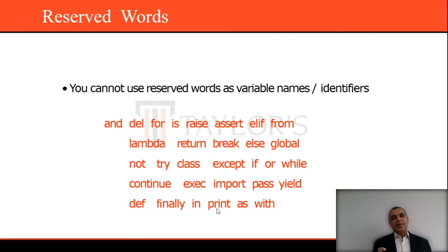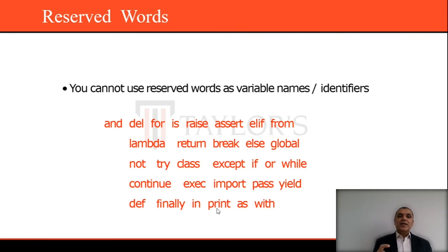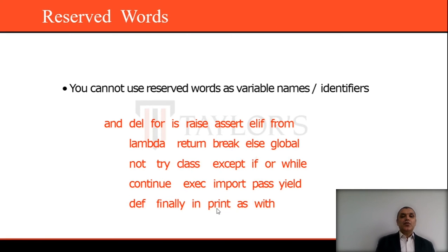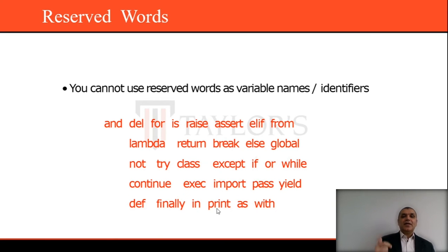Before we use any variable in our programming language, we are supposed to declare it. We also need to identify its type. There are reserved words — keywords — that we are not able to use as variable names. Examples of reserved keywords include: class, in, print, as, not, lambda, return, and many others. We need to be careful that we cannot declare a variable using reserved keywords, as the programming language will not allow it.